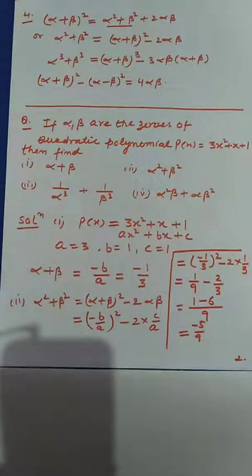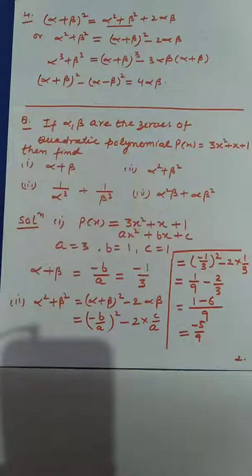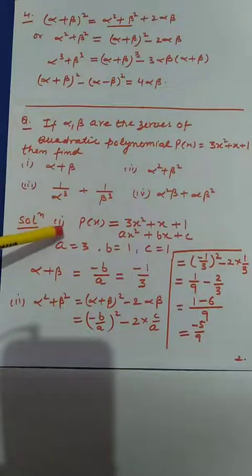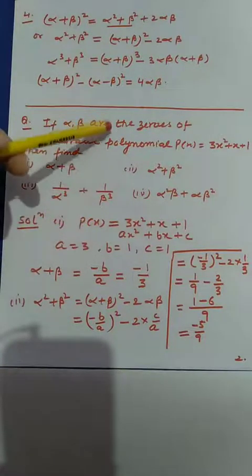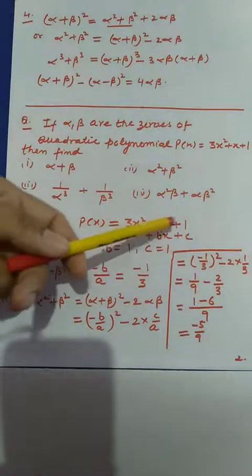The basic rule you have to keep in mind to solve these types of problems is that you have to convert the values you need to find into the form of alpha plus beta and alpha·beta. Whatever values are given, you have to convert them by applying these results. First of all, we have to write the given polynomial, which is p(x) equal to 3x² plus x plus 1.